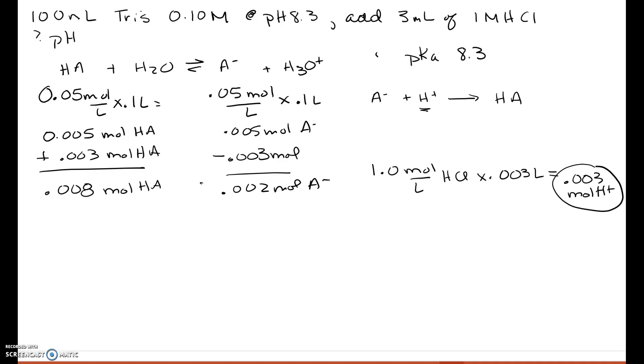This is a weak acid conjugate base buffer system, so we can use Henderson-Hasselbalch to calculate our pH. pH equals pKa plus the log of A minus over HA. And we can put our moles in here. So 8.3 plus the log of 0.002 divided by 0.008, so that's the log of 0.25. When you put that into your calculator,